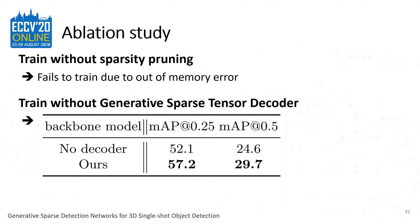We conduct ablation studies to further justify the design choices of our model. First, we train our model without sparsity pruning, maintaining cubically growing coordinates after every transpose convolution. Not surprisingly, our model fails to train due to out-of-memory error. Second, we train our model without the generative sparse tensor decoder, directly making bounding box predictions on the output of the encoder. Our proposed decoder clearly outperforms this baseline, demonstrating that it is crucial to generate supports for instance centers that are otherwise not reachable from the surface scan inputs.